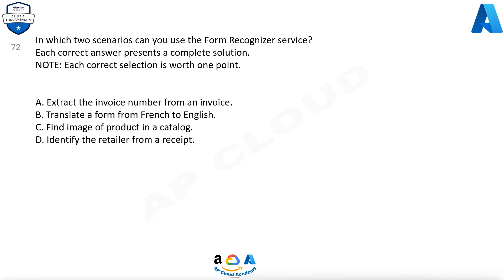In which two scenarios can you use the Form Recognizer service? Each correct answer presents a complete solution. Note, each correct selection is worth 1 point. A. Extract the invoice number from an invoice. B. Translate a form from French to English. C. Find image of product in a catalog. D. Identify the retailer from a receipt.